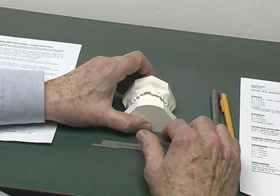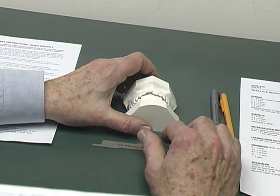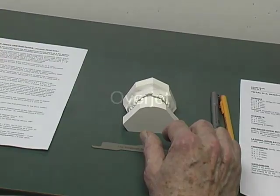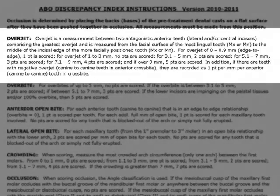I will begin at the top left of the form with the category overjet. Overjet is a measurement between two antagonistic incisor teeth comprising the greatest overjet, and is measured from the facial surface of the most lingual tooth — maxillary or mandibular — to the middle of the incisal edge of the more facially positioned tooth, maxillary or mandibular. For overjet 0 to 0.9 millimeters, which is edge to edge, one point is scored. For overjet of 1 to 3 millimeters, no points are scored.